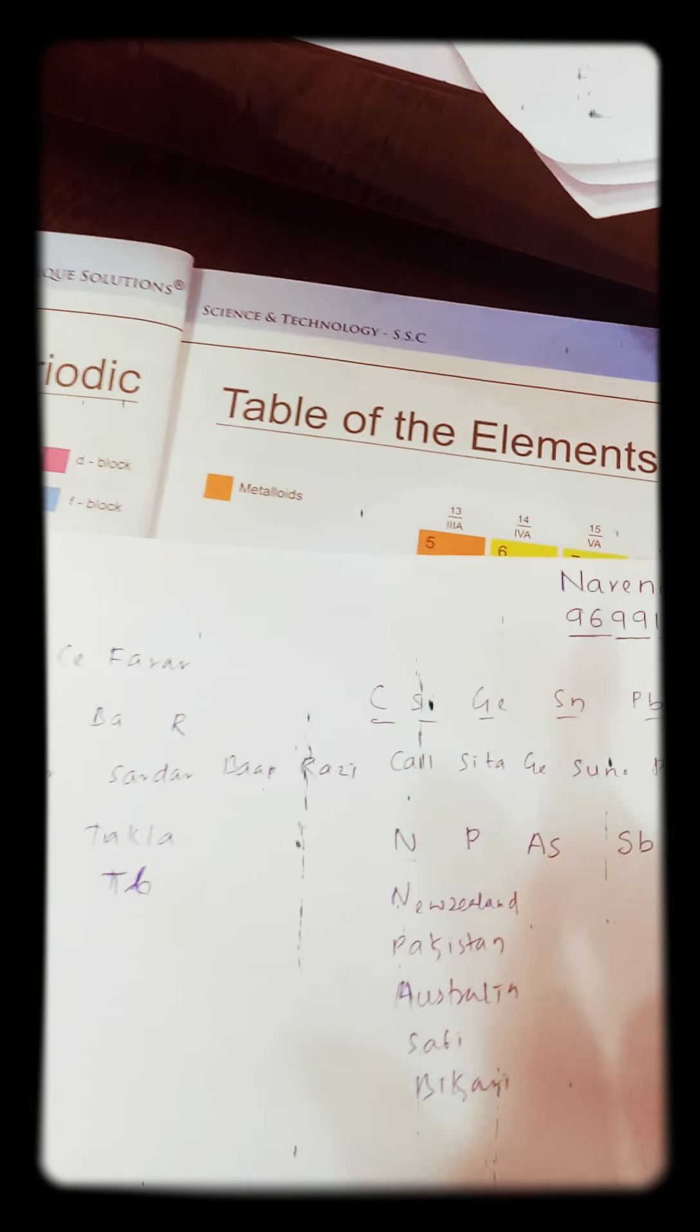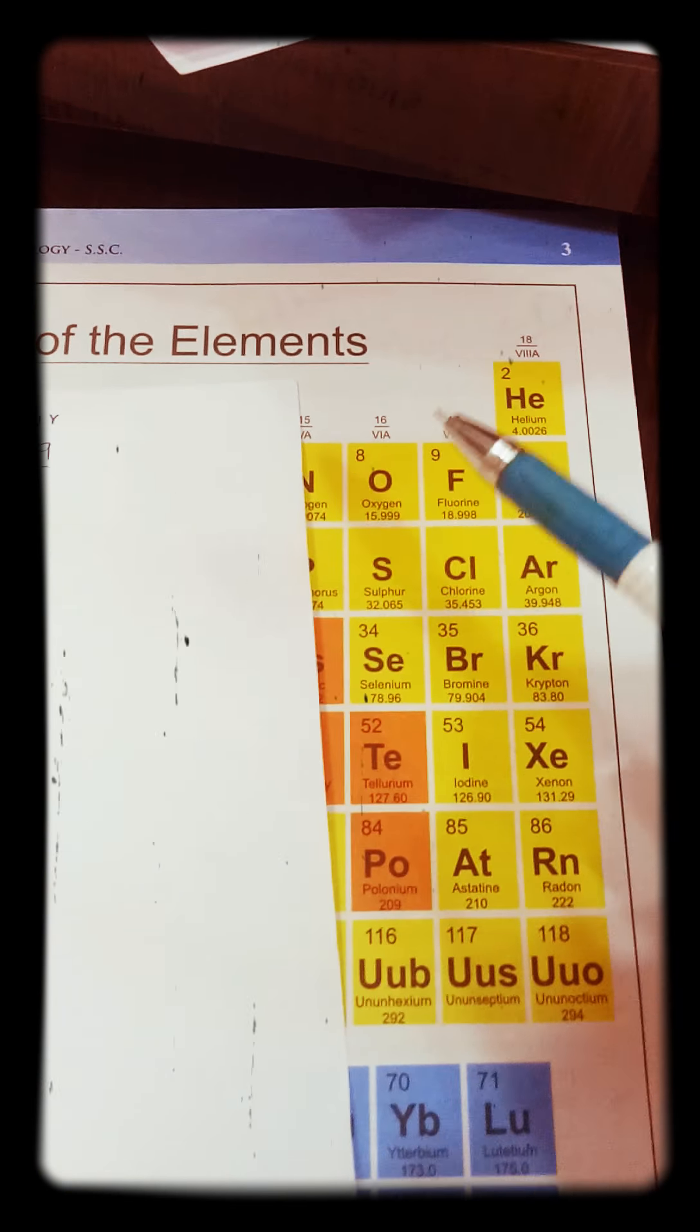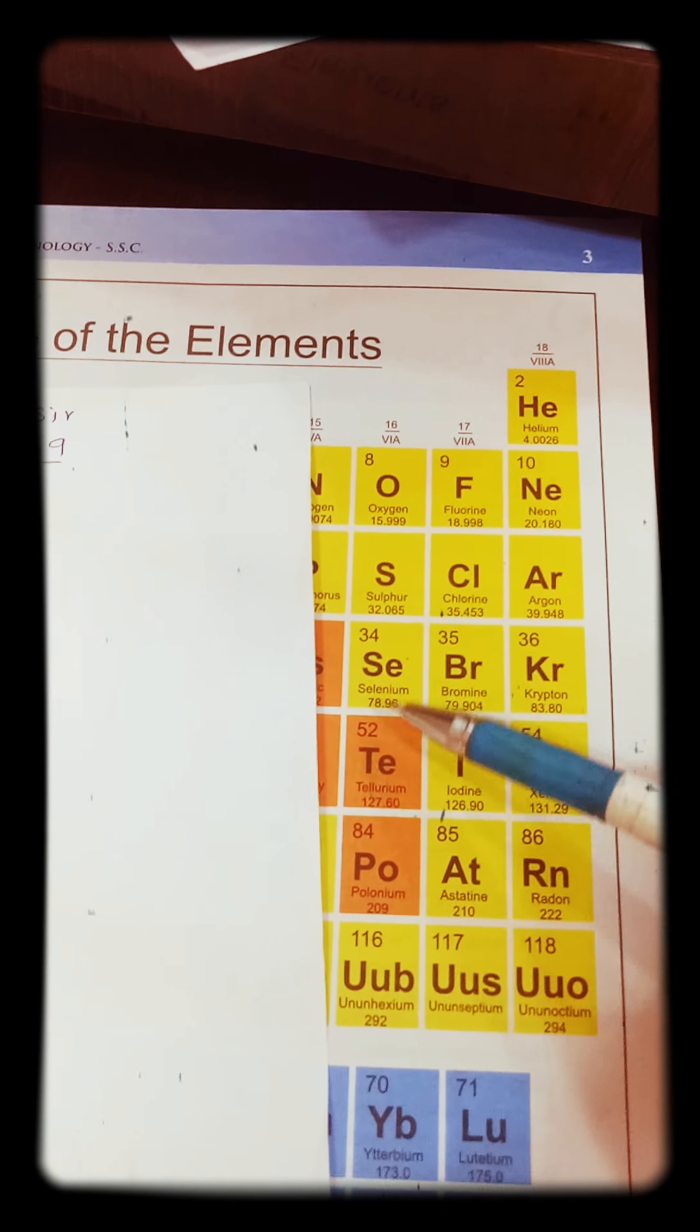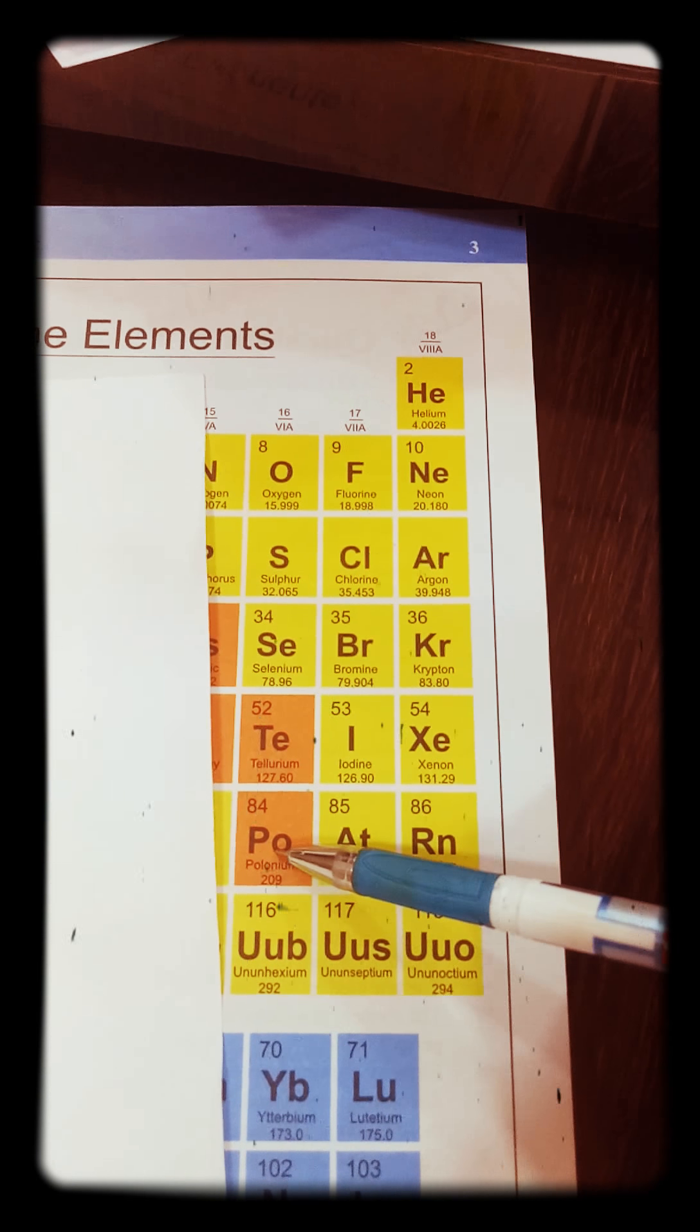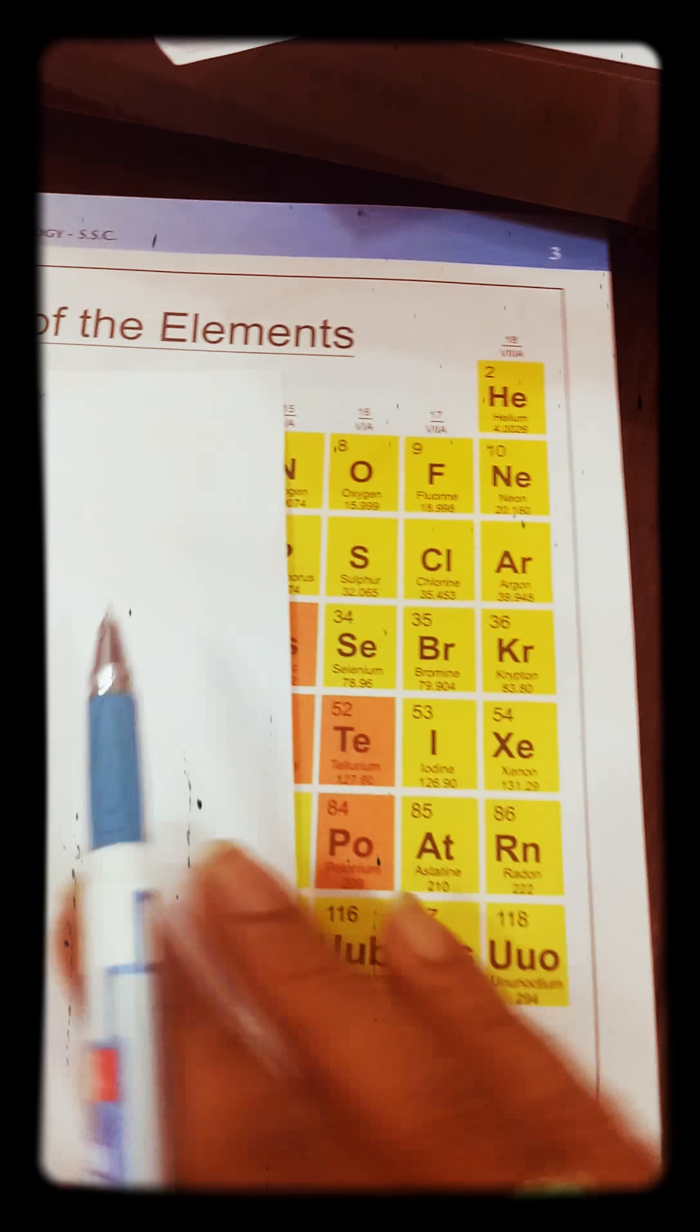Next, the 6th A group. Here you can go: OE, Sardar, Seela, Teri, Poti. Oxygen, Sulphur, Selenium, Tellurium, Polonium. OE, Sardar, Seela, Teri, Poti.